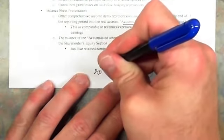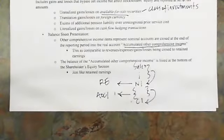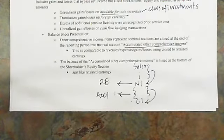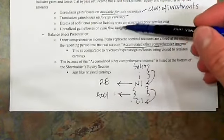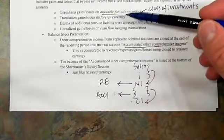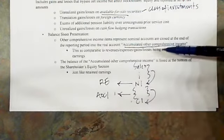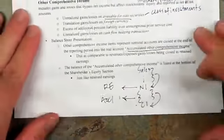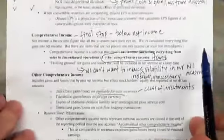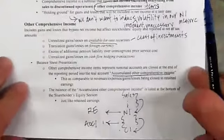Items close to accumulated other comprehensive income, and just like retained earnings, it can have a debit or credit balance. If these are a bunch of loss accounts and they're closed over, they could lead to a debit balance in AOCI — so it's just like retained earnings in that regard.